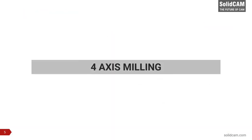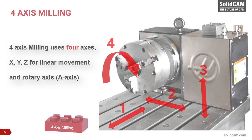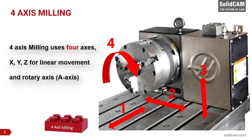4-axis milling can help reduce setup time, increase productivity, and improve the overall quality of machined parts. 4-axis milling uses 3 axes — X, Y, and Z — and an additional rotary axis known as the A-axis. This single rotational axis allows the machining of multiple sides of the workpiece in a single setup.